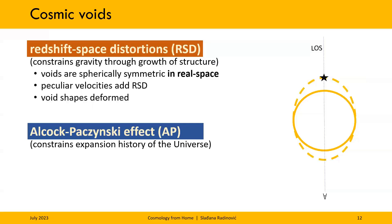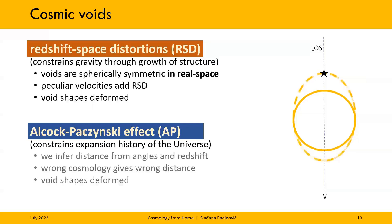On the other hand, the AP effect arises from the fact that in observation we measure redshifts and angles in the sky. And to actually convert these to physical distances, we need to assume a fiducial cosmology. We don't know if this is same as the true cosmology of the universe. Probably it is not. And if we are wrong, we will end up with wrong distances. This also distorts the galaxy positions and therefore the shape of the void.